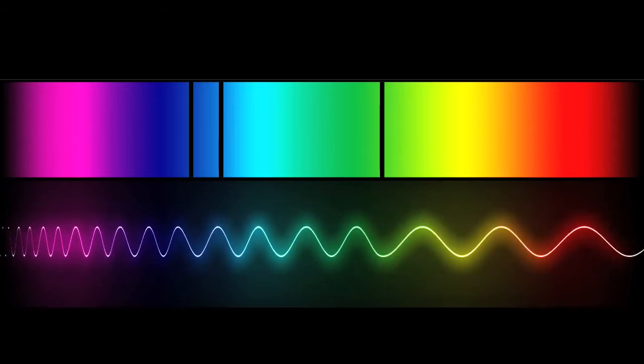Redshifts are measured from the signature absorption and emission lines of atoms and molecules that are present in the spectrum of celestial objects. The wavelengths of these signature lines can be measured very accurately and are known. They can therefore be compared to the spectrum of a galaxy to calculate the redshift.